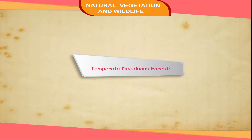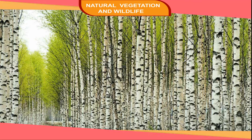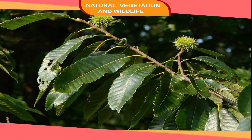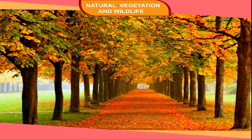Temperate Deciduous Forests. These are regions having moderate temperature and rainfall. When it gets cold in autumn, these trees shed their leaves. In the USA, the season when these trees shed their leaves is called fall. Common trees are maple, walnut, birch, and chestnut. The wildlife consists of deer, foxes, and wolves. The areas covered by such forests are northeastern USA, northeastern China, Japan, southern Chile, and New Zealand.